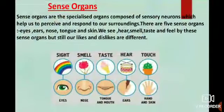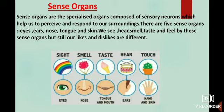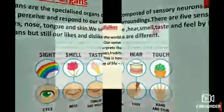First topic is sense organs. Sense organs are the specialized organs composed of sensory neurons which help us to perceive and respond to our surroundings. There are five sense organs: eyes, ears, nose, tongue, and skin. Eyes help us to see, nose helps us to smell, tongue and mouth help us to taste, ears help us to hear, and skin helps us to touch.